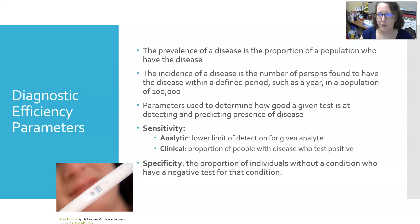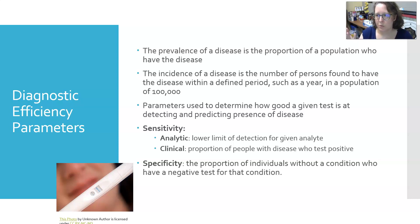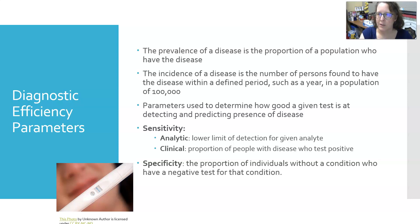There are two types of sensitivity often referred to in the lab: analytical and clinical. Analytic sensitivity is the lower limit of detection for a given analyte — for example, whether it can detect down to zero, 0.5, or 10 units. Anything below that lower limit would have to be reported as less than that value for the given analyte.